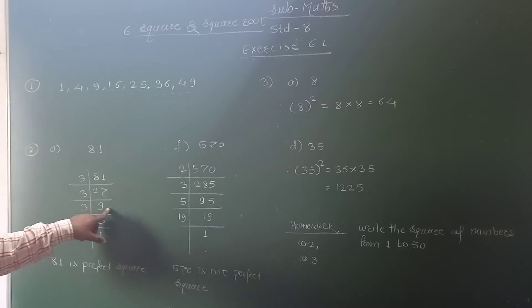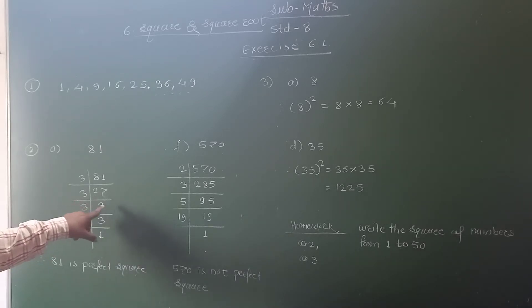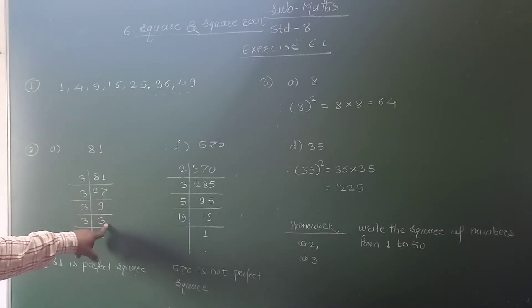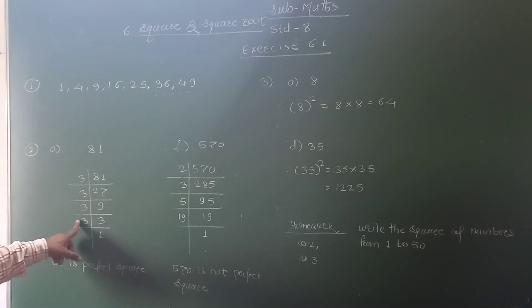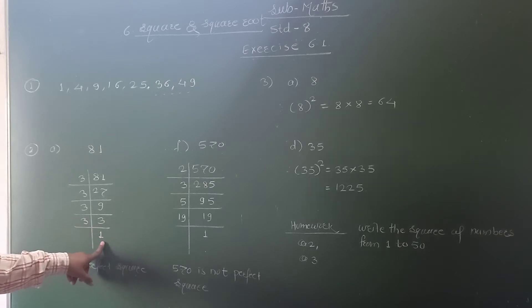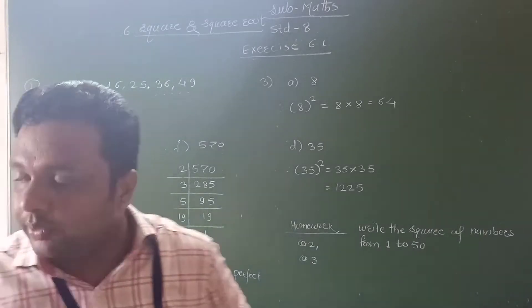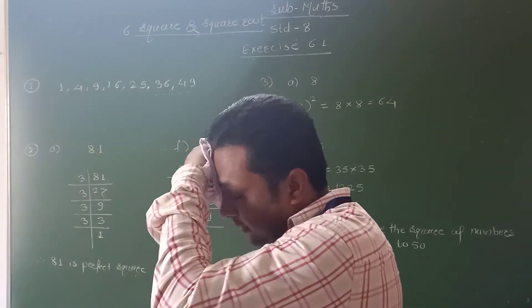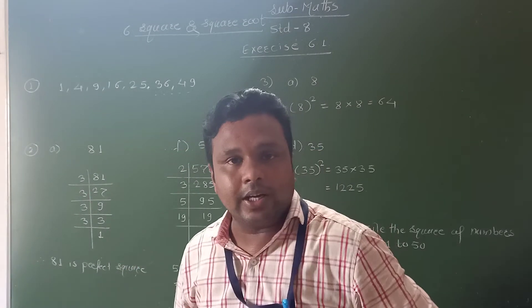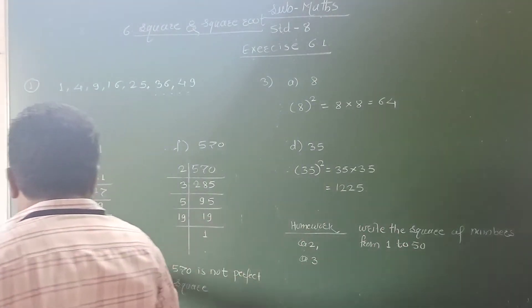We know that 9 is also divisible by 3, so here I write 3. 3 threes are 9. Then here we get 3. Again, 3 is divisible by 3, so 3 divided by 3 gives us 1. Now the prime factors of 81 are: 3, 3, 3, and 3.